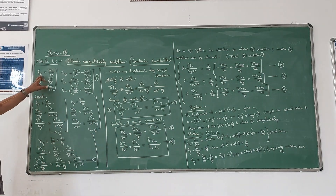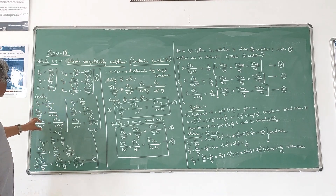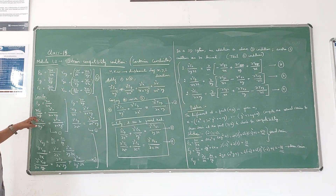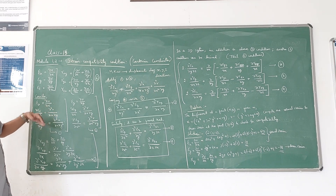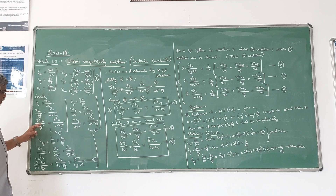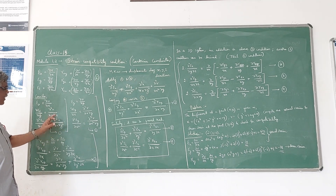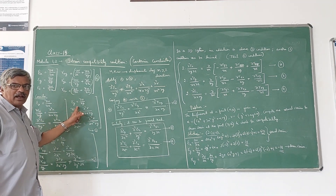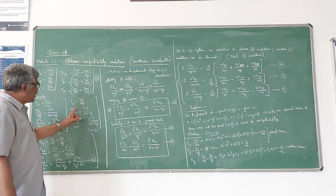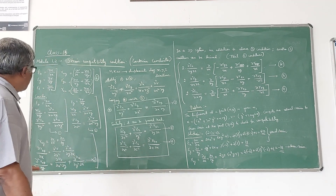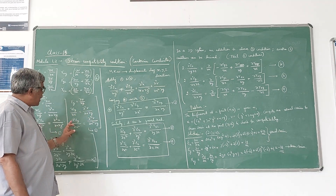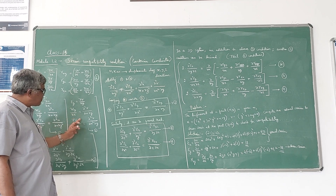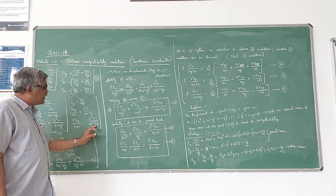I will take Epsilon X from the definition: Epsilon X is dou U by dou X. Now I will differentiate Epsilon X with respect to Y twice. If you differentiate once, you get dou square U by dou X dou Y. The second derivative gives dou square Epsilon X by dou Y square equals dou cube U by dou X dou Y square. Similarly, I will take Epsilon Y — by definition Epsilon Y is dou V by dou Y — and differentiate this with respect to X twice, giving dou square Epsilon Y by dou X square equals dou cube V by dou X square dou Y.